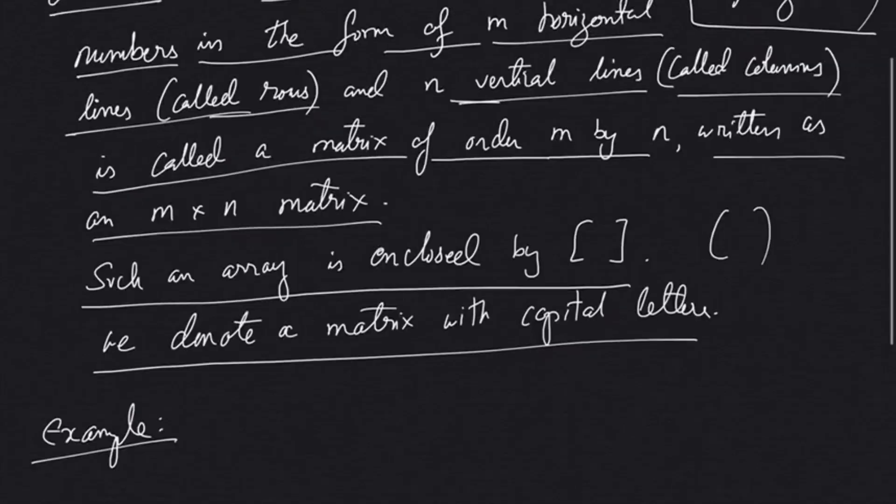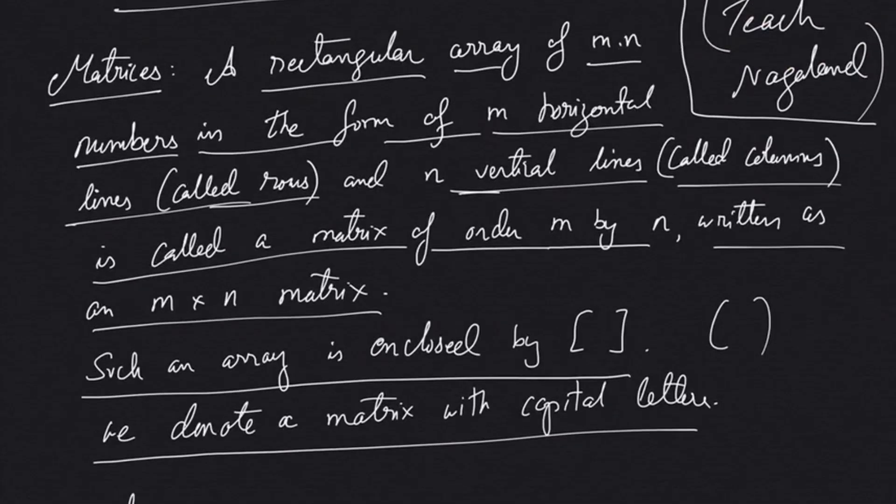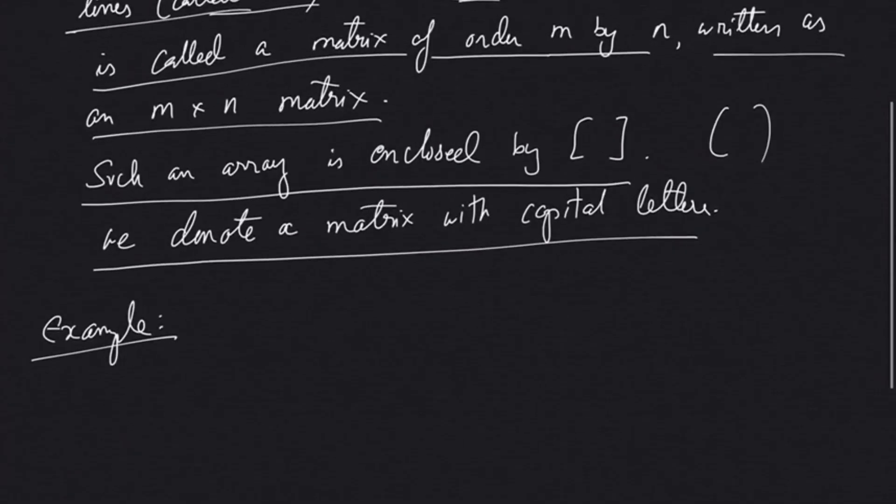Let's discuss this with examples because some may not understand clearly from the definition. A matrix, which should always be denoted by capital letters, can be written in brackets arranged in horizontal and vertical lines. Let's arrange one matrix: 3, 5, -4, 0, 1, 9.